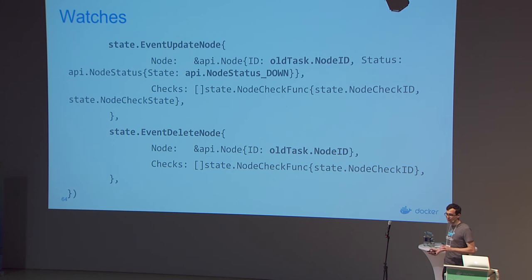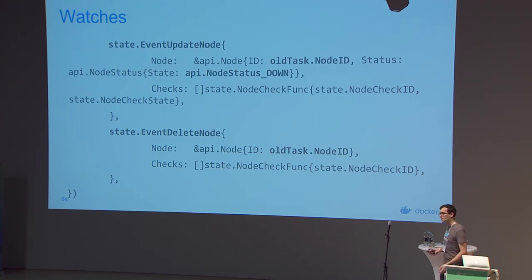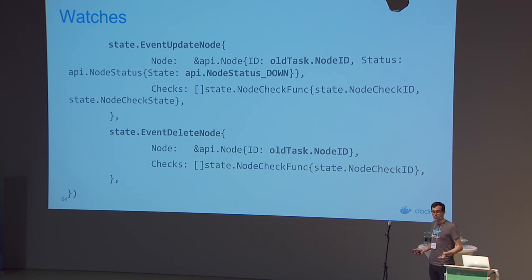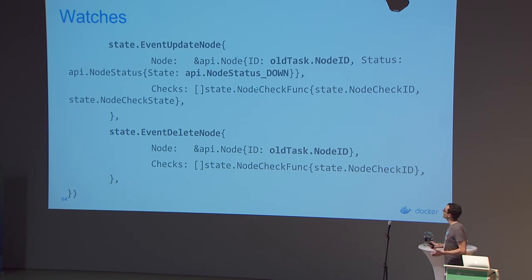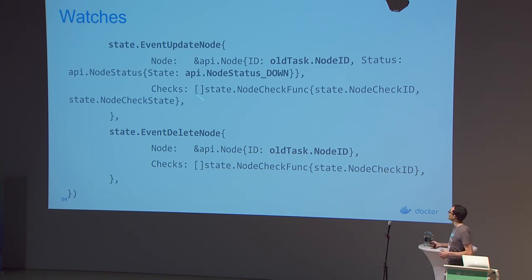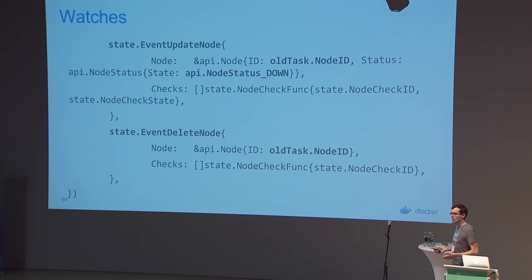This shows that you can add many selectors. For the orchestrator, if a node goes down while waiting for the task to update, you also want to treat that like the task stopped running — if the node went down, you'll never hear updates about the task. So update-node is waiting for the node to reach a status of down, filling in the node ID so the watch only reports when that specific node goes down. If the node were to be deleted from the swarm, we also treat that like the old task went down.